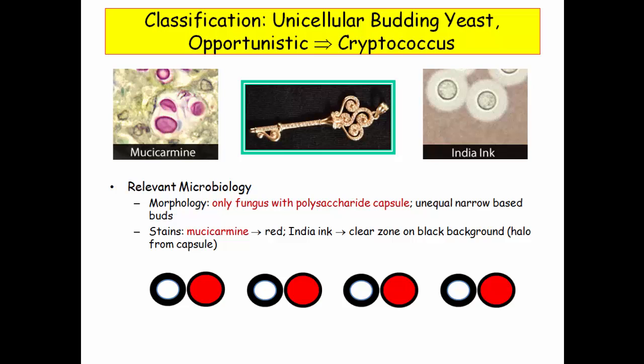The organism has a capsule — the NBME is obsessed with this capsule. As with encapsulated bacteria, the capsule helps the organism escape phagocytosis and is therefore a major virulence factor. Reproduction is through budding, as this is a yeast. Those buds are described as unequal and narrow-based, as opposed to the broad base seen with blastomyces.